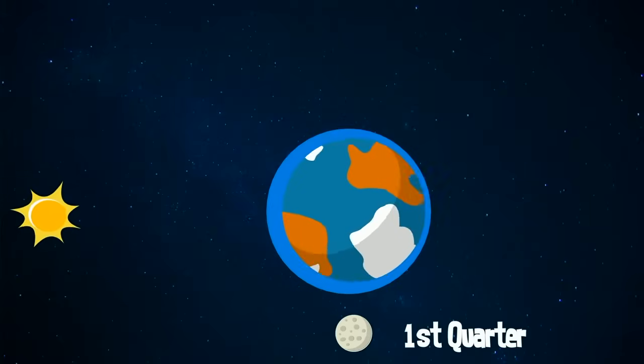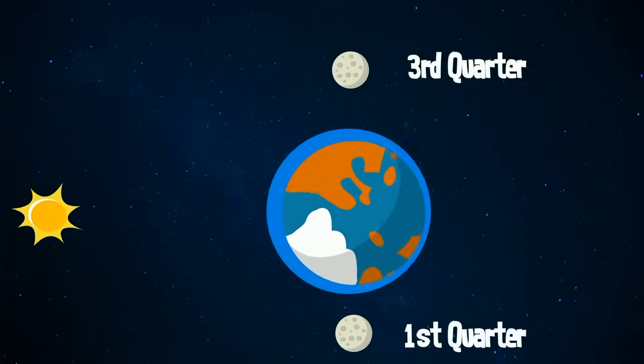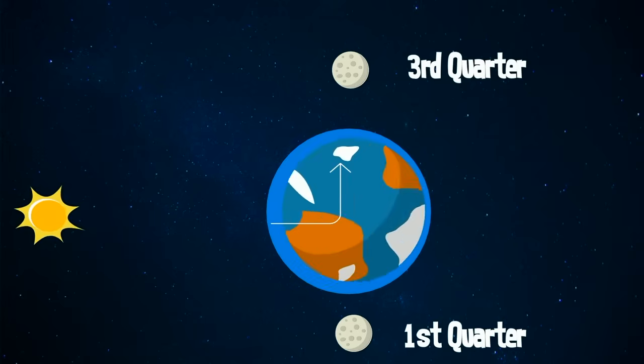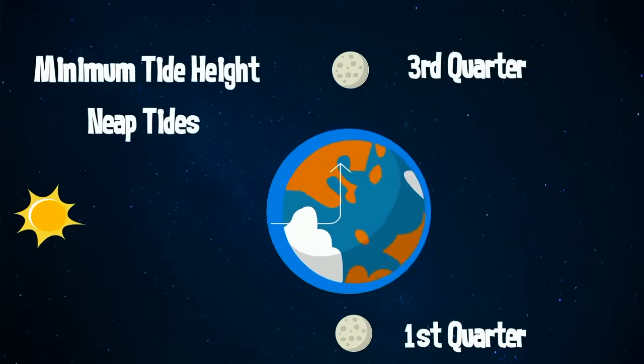When the moon is at first and third quarter, the sun and moon are separated by 90 degrees, and the solar tidal force cancels the moon's tidal force, and the tidal range is at its minimum. These tides are called neap tides.